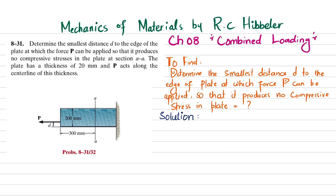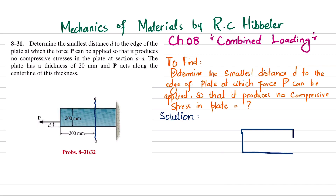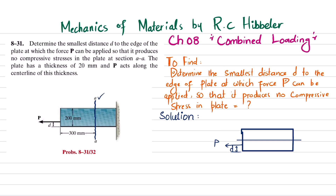Let's start with the solution. What we will do is section the plate over this distance and draw the free body diagram. So when you cut the beam at section AA, you will have a normal force N along the midline and there will be a bending moment M as well. We will find N and M using the equations of equilibrium.